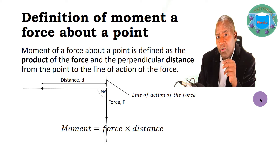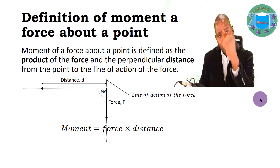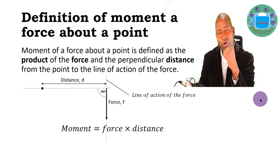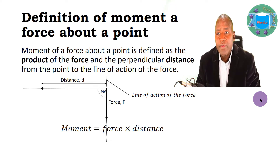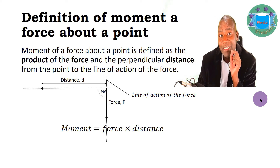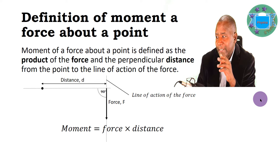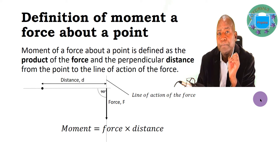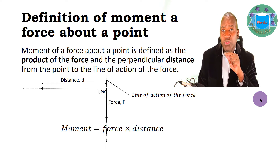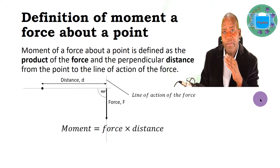What are some examples of the turning effect of a force? Think about a door which is turning about the hinges, or your arm which is turning about the elbow. All these are examples of a system turning about a point because a force has been applied. We define moment of a force about a point as the product of that force and the distance from the point which makes 90 degrees with the line of action of the force.